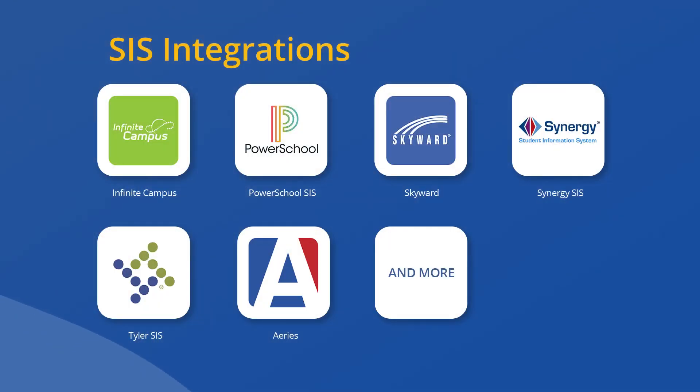In addition to our SSO integrations, we also have integrations with student information systems that pull in supplemental data about your users — things like their grade level, their student ID, and their courses. So now users are in the system, synced up with an SSO and an SIS to automate that process. Now, what does it look like for assets?